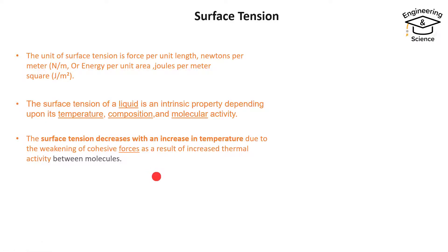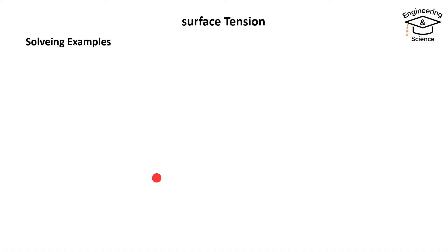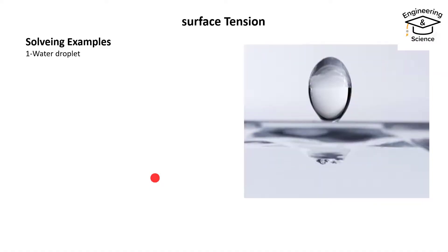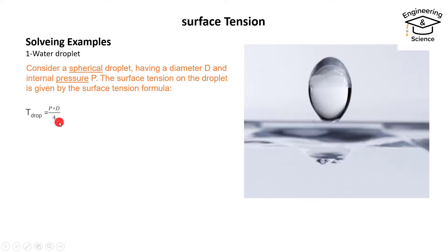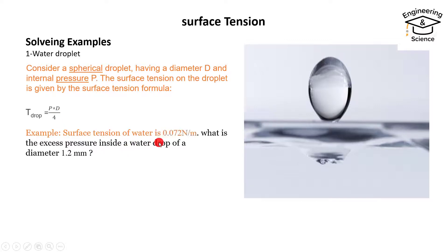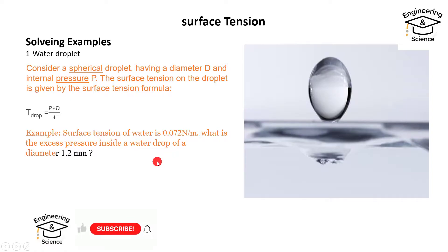Let's solve some examples. For a water droplet, consider a spherical droplet having a diameter D and internal pressure P. The surface tension formula for a water droplet is: surface tension equals pressure multiplied by diameter over four (σ = PD/4). For example, the surface tension of water is 0.072 Newtons per meter — what is the excess pressure inside a water droplet if the diameter is 1.2 mm?